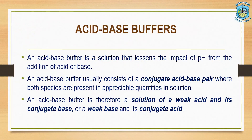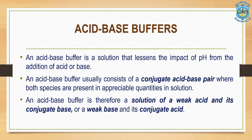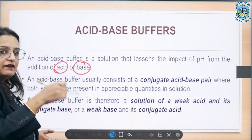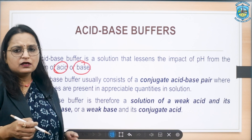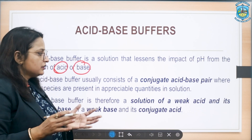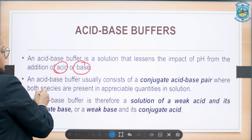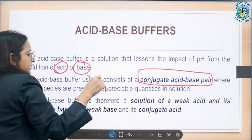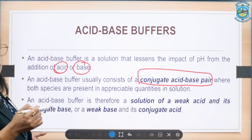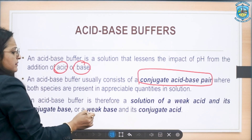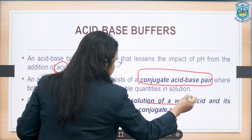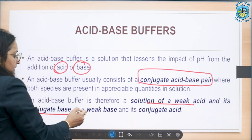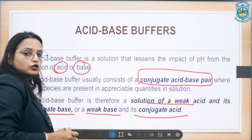An acid-base buffer is a solution that lessens the impact of pH change from the addition of acids or bases. Whatever amount of acid or base you add, there will be practically no change in its pH. We can say that an acid-base buffer consists of a pair of conjugate acids and bases. An acidic buffer therefore consists of a weak acid like acetic acid and its conjugate base, while a basic buffer consists of a weak base along with its conjugate acid.